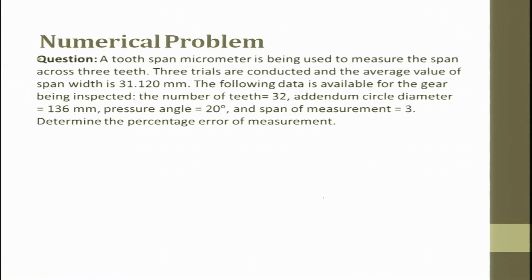Let us take a problem and solve it. A tooth span micrometer is used to measure the span across three teeth (T = 3). Three trials are conducted and the average span value is 31.120 mm. The gear data: number of teeth = 32, addendum circle diameter = 136 mm, pressure angle = 20°, span of measurement = 3. Determine the percentage error of measurement.